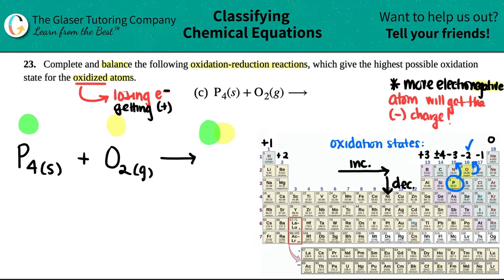But now what is the charge of phosphorus? We need to have the highest possible oxidation state for the oxidized atom. Now, this trend isn't going to tell you that, but what I can tell you is that for phosphorus, the highest charge that it could be is a plus five. That's the highest that it can go. Phosphorus can lose five electrons if it wanted to.